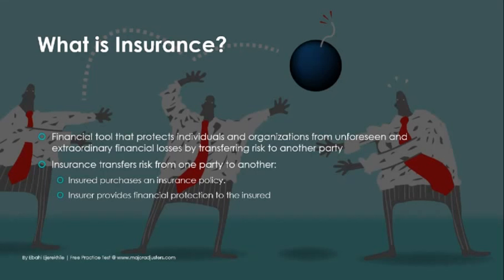Instead of you holding all the risks when you get into a car accident — having to pay for injuries, having to pay for repairs — you are able to transfer that risk to another party. That party is going to be your insurance company, but you have to purchase an insurance policy to do that. The insurer provides financial protection to the insured so that you won't have to come out of pocket for an extreme amount, and that's what you exchange for your policy premium.